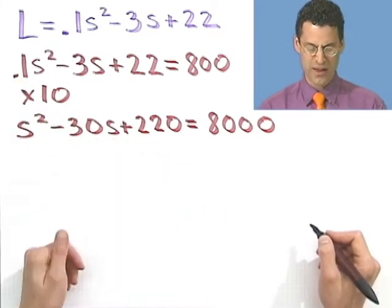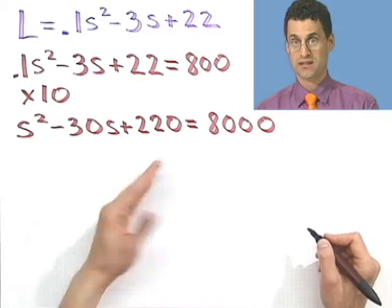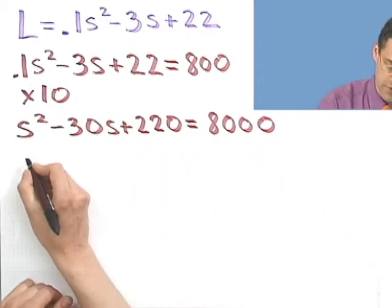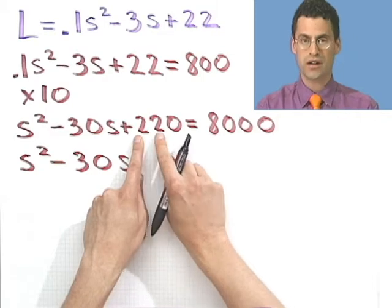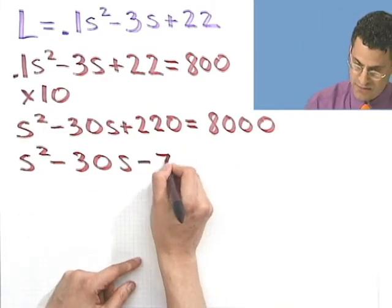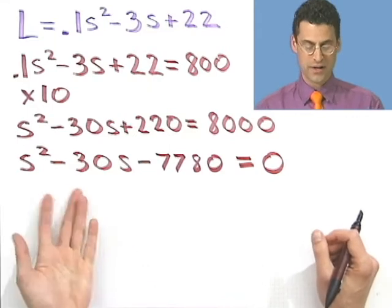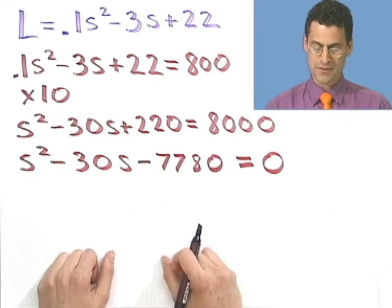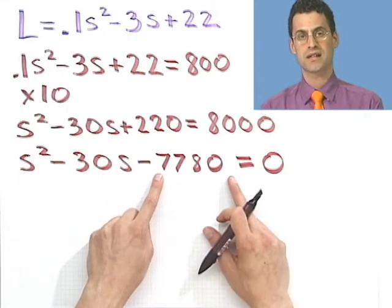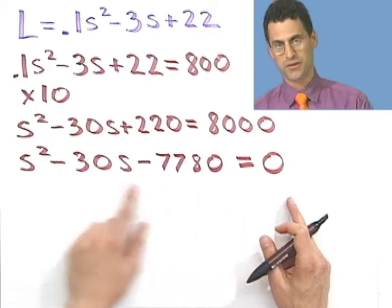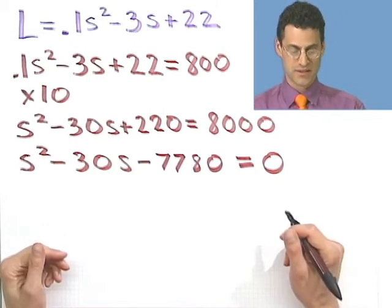Now I've got to bring the 8,000 over to this side, because I want everything equal to 0 to solve the quadratic. So it becomes minus 8,000, and then I add 220 — so that's a net negative of 7,780. So I have: s squared minus 30s minus 7,780 equals 0. I need two numbers that multiply to give 7,780 but combine to give 30 — this seems way too obscene. So I'm not even going to bother trying to factor this. I'm going to immediately jump to the quadratic formula.